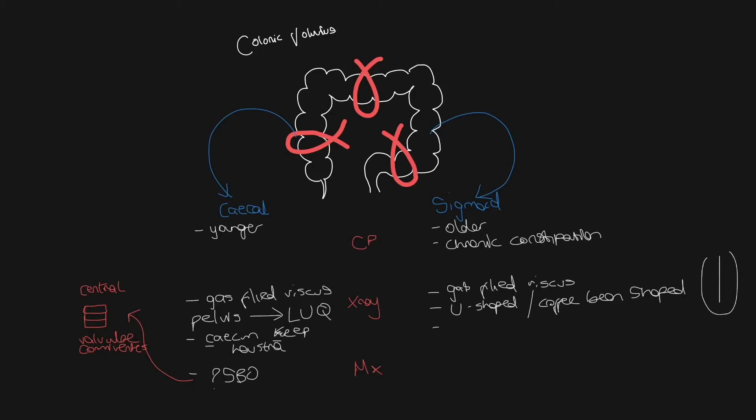Again, because the sigmoid is the distal most part of the large bowel, you eventually will get large bowel obstruction. And just as a recap, these will be peripherally placed dilated loops. They have haustra, which look different to valvulae conventes because they don't go the whole circumference around the bowel. And the pelvic overlay sign is when the dilated sigmoid overlays dilated large bowel.